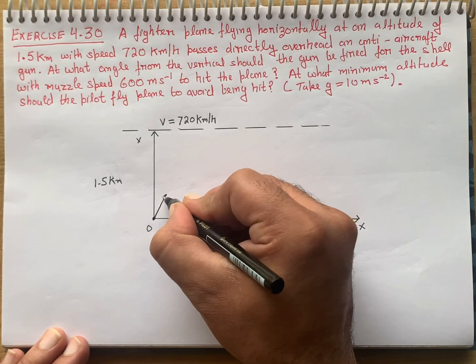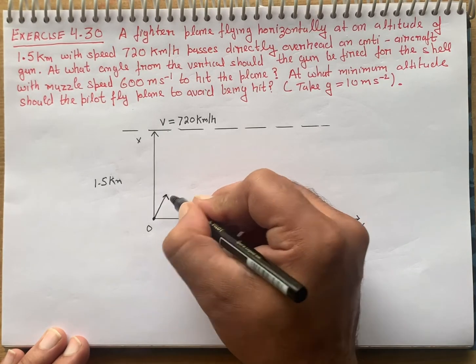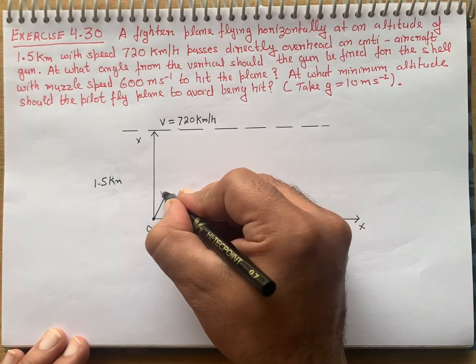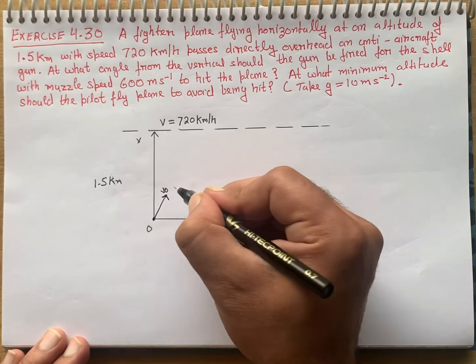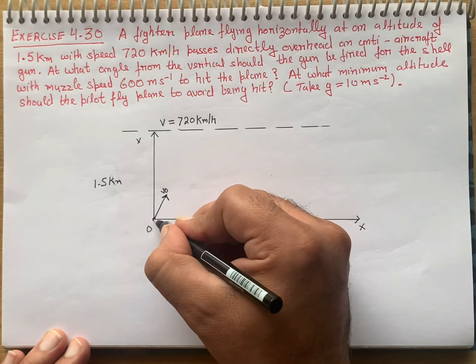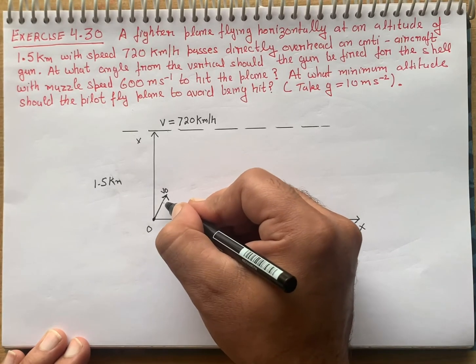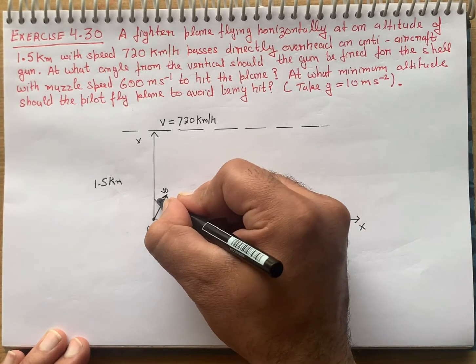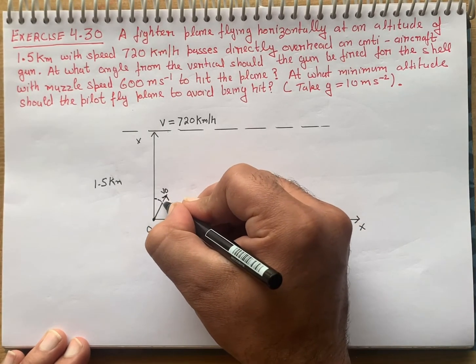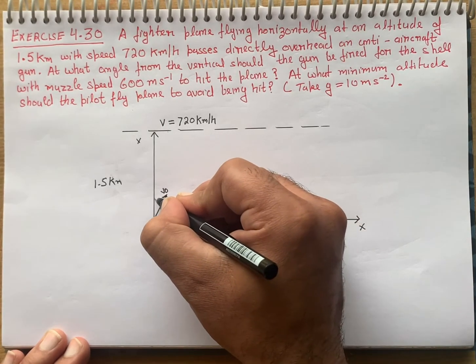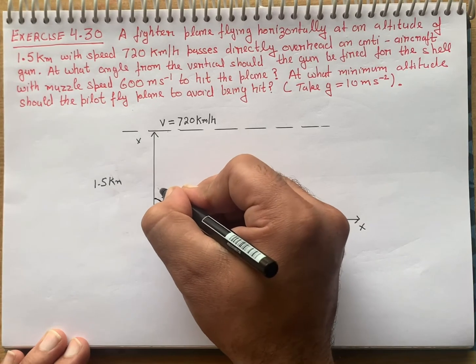The anti-aircraft gun will fire a shell. We need to find the angle with the vertical, which means the y-axis is the vertical. The initial velocity given is the muzzle speed of 600 meters per second.